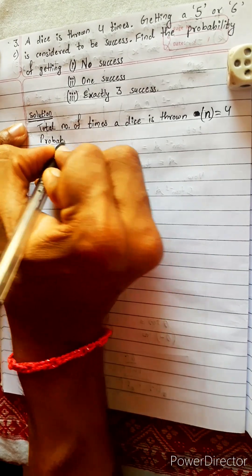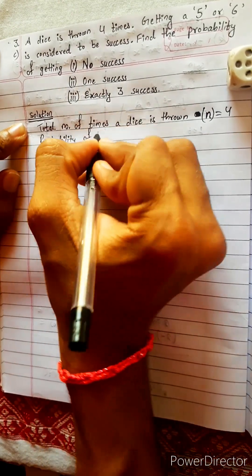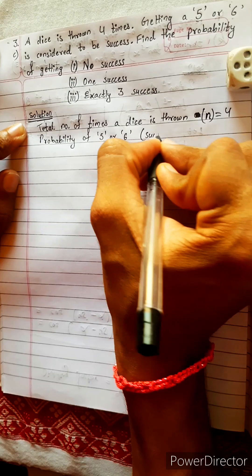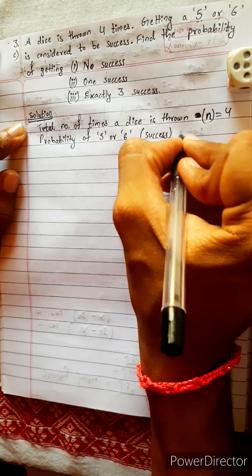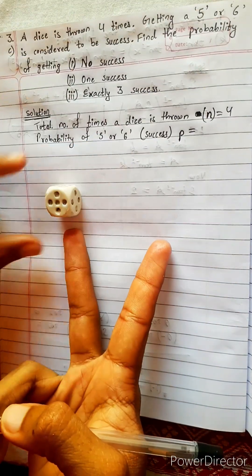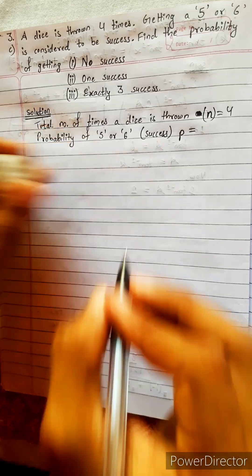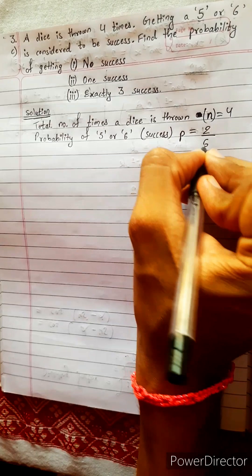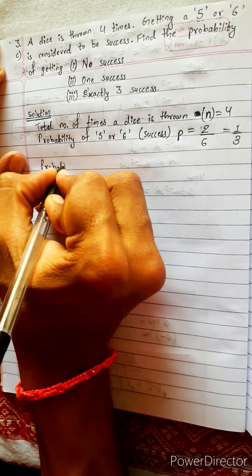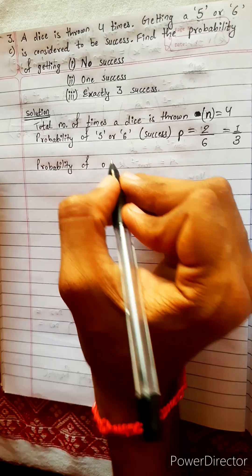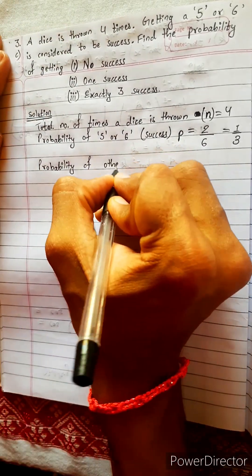Probability of getting five or six — this is called success probability, represented by small p. p equals two favorable cases divided by total six faces, so two by six. Our success probability is one by three.